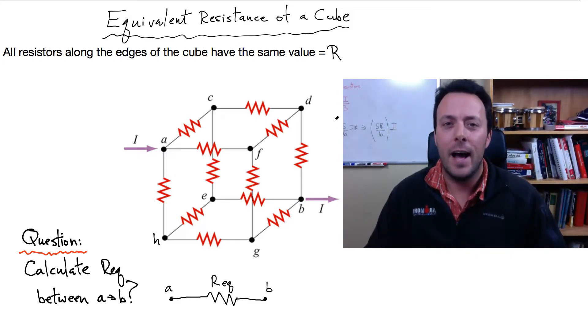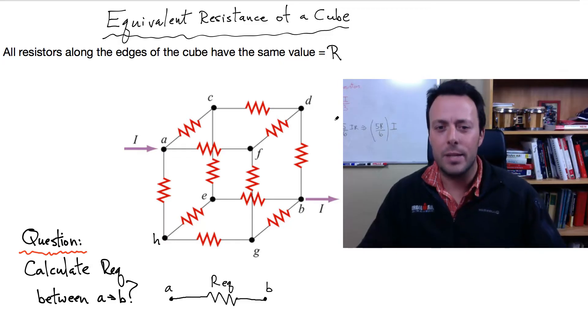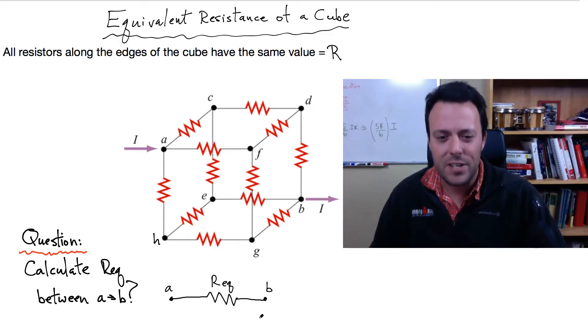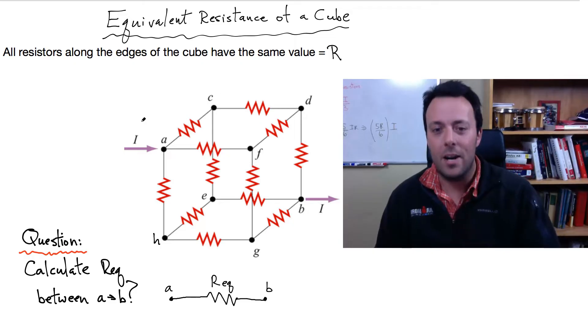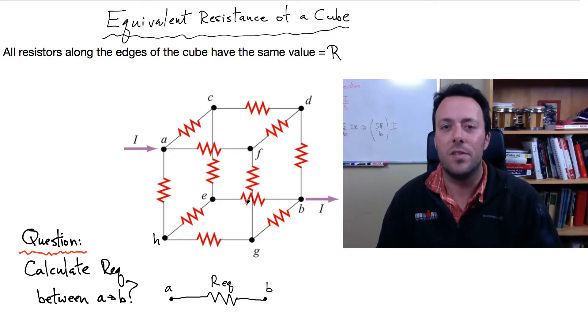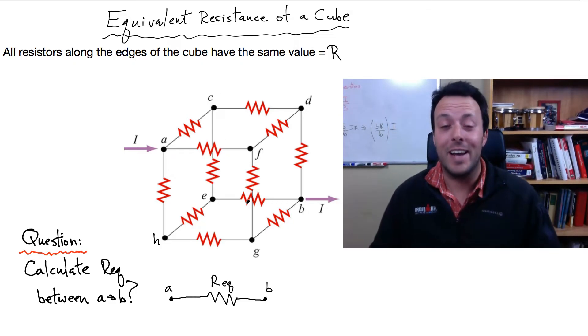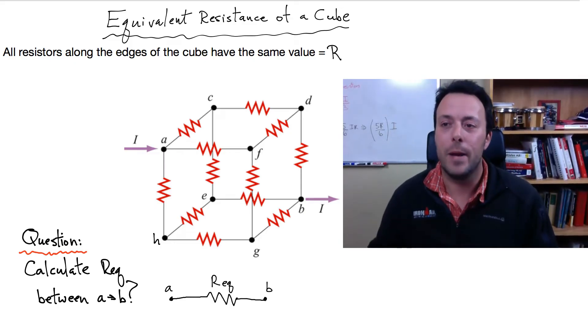And the question is, how can I simplify this complicated network of resistors into something that looks very simple, the little case I've drawn here at the bottom, into one equivalent resistor, where I've combined all the resistors of the cube. This is a hard problem, and I know what you're thinking. Who comes up with these things? I don't know. But anyway, I'm going to teach you how to solve that problem.